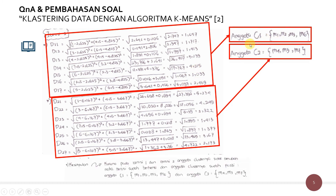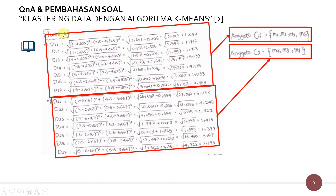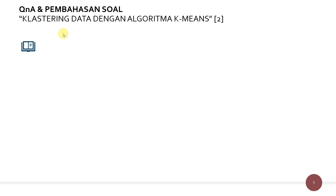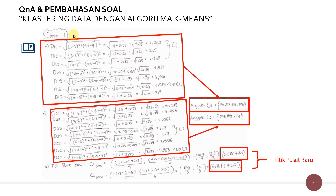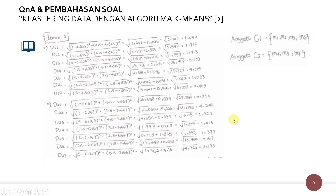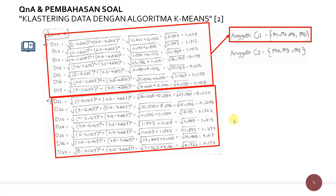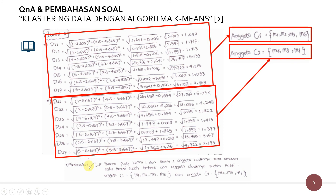Kemudian kita bandingkan anggota C1 dan C2 dari iterasi kedua dengan iterasi pertama. Iterasi pertama: C1 berisi M1, M2, M3, M6, dan C2 berisi M4, M5, M7 — sama dengan iterasi kedua. Karena anggota iterasi kedua dengan iterasi pertama itu sama, maka pengulangannya berhenti. Kesimpulan: anggota C1 adalah M1, M2, M3, dan M6, sedangkan anggota C2 adalah M4, M5, M7.